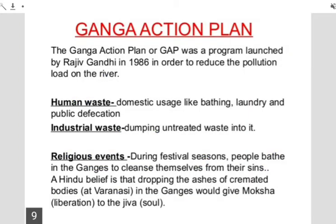The Ganga river and its tributaries run from Gangotri in the Himalayas to Ganga Sagar in the Bay of Bengal, covering states like Uttar Pradesh and West Bengal. More than hundreds of towns and cities dump their garbage, excreta, wastewater, and ashes into the Ganga. In addition, untreated industrial waste containing different kinds of chemical products is also dumped into the river, making the water unfit and toxic for aquatic life and for those who depend on it.